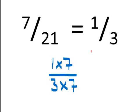Let's take a look at 7 over 21. It's simplified to 1 third, but how did we do that? Well, if we factor — in other words, we take a look at what are the smallest numbers that we can multiply to be 7 — in this case, it would be 1 times 7. And if we look to see what are the smallest numbers that we could multiply to be 21, that would be 3 times 7.